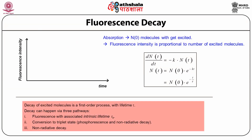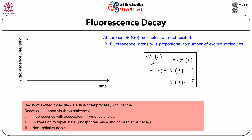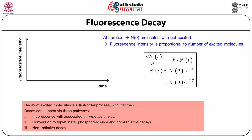We show how fluorescence decays in time. The fluorescence intensity follows an exponential curve where the absorbed molecules get excited, and fluorescence intensity is proportional to the excited molecules, mathematically expressed as dN/dt = -kN(t), where N(t) = N₀·e^(-kt) = N₀·e^(-t/τ). The decay of excited molecules is a first-order process with lifetime τ, and decay can happen via three pathways: fluorescence with associated intrinsic lifetime τ₀, conversion to triplet state phosphorescence, and non-radiative energy decay.